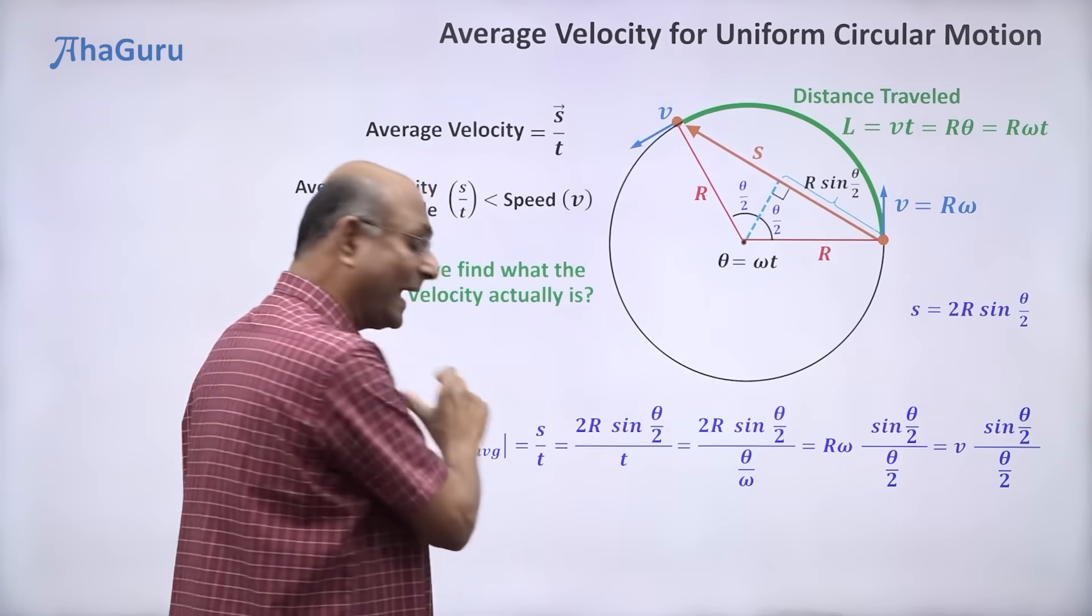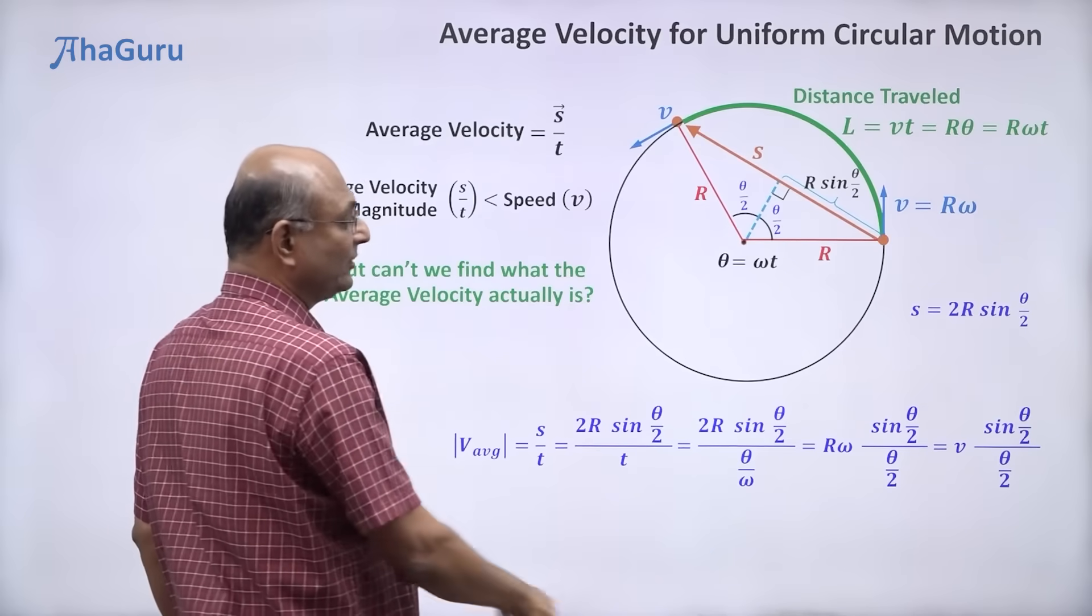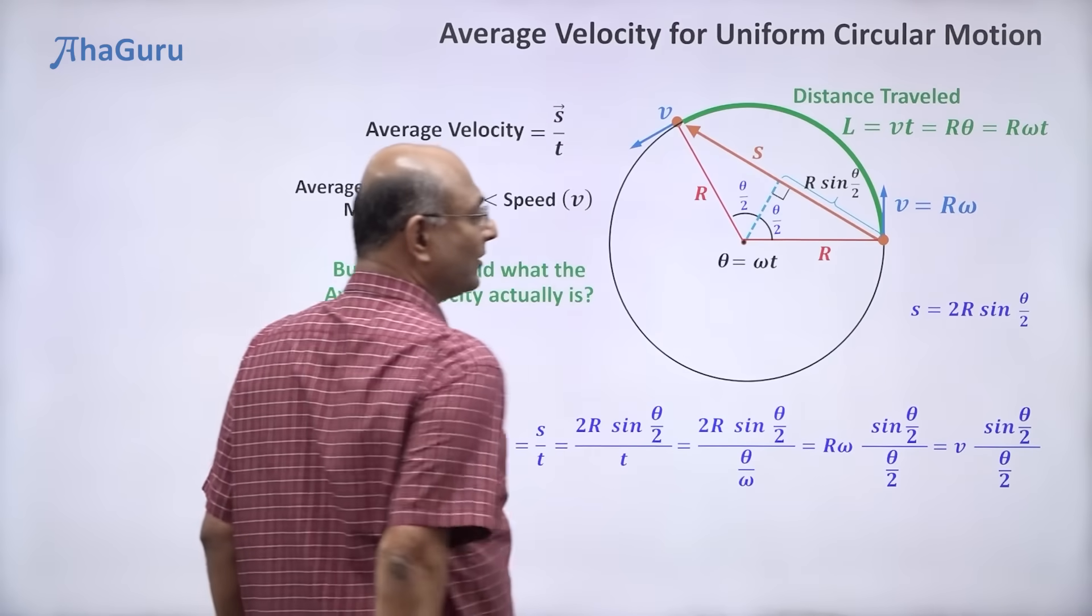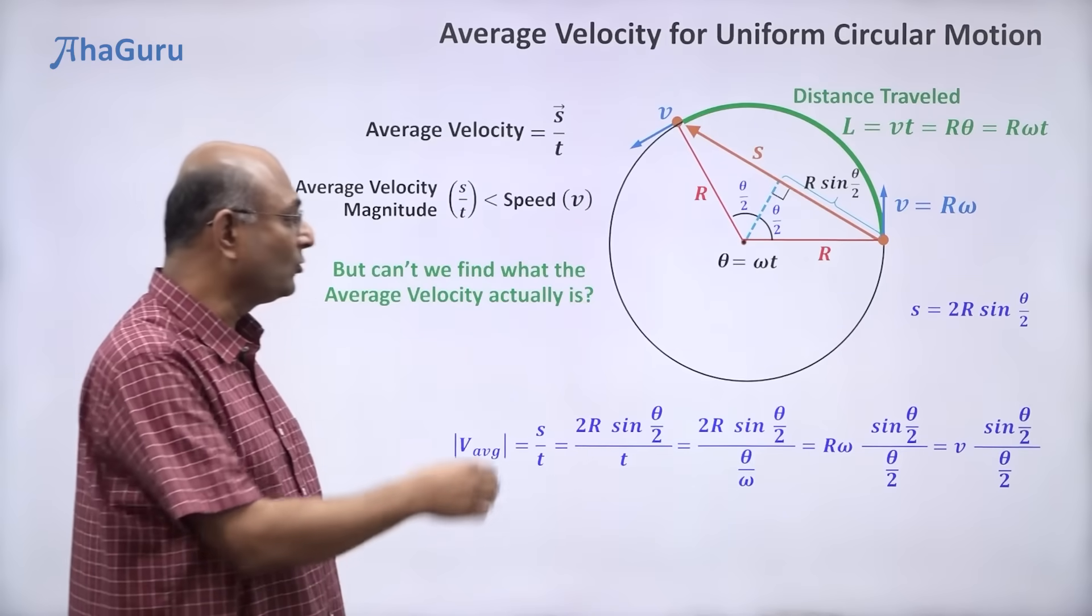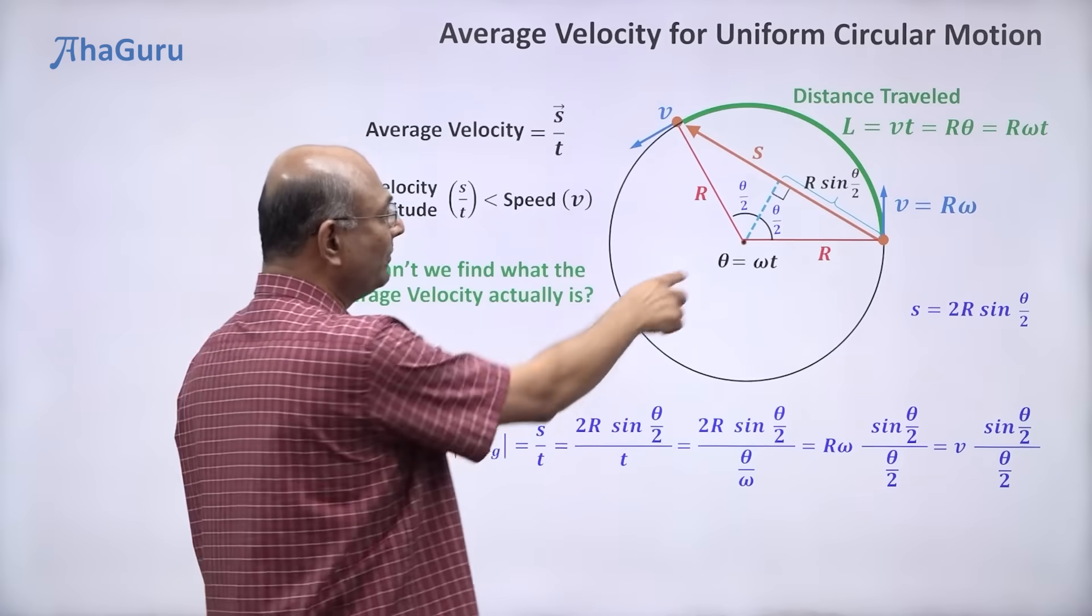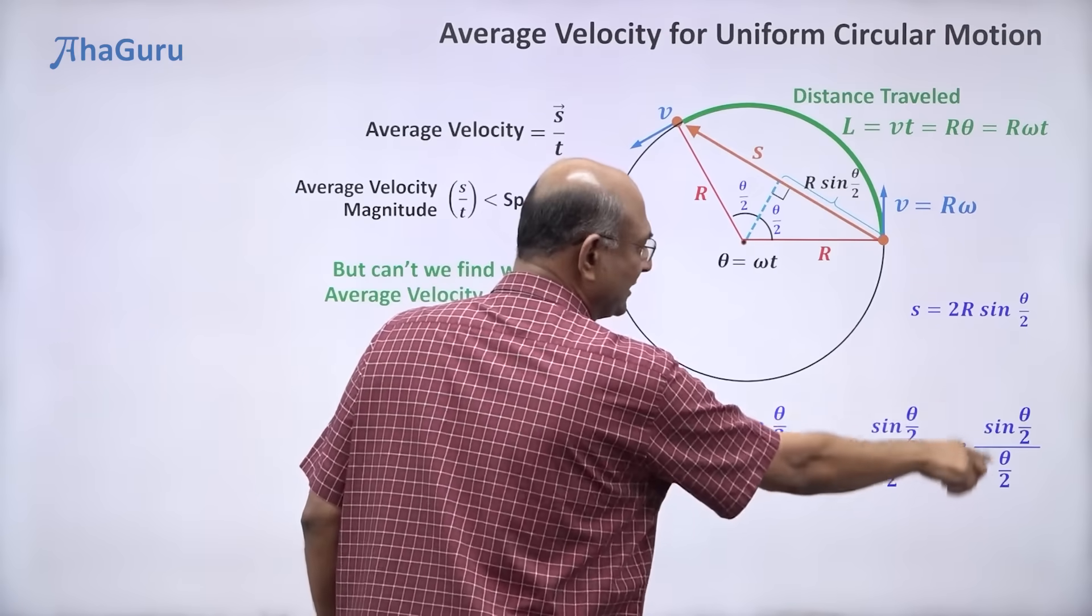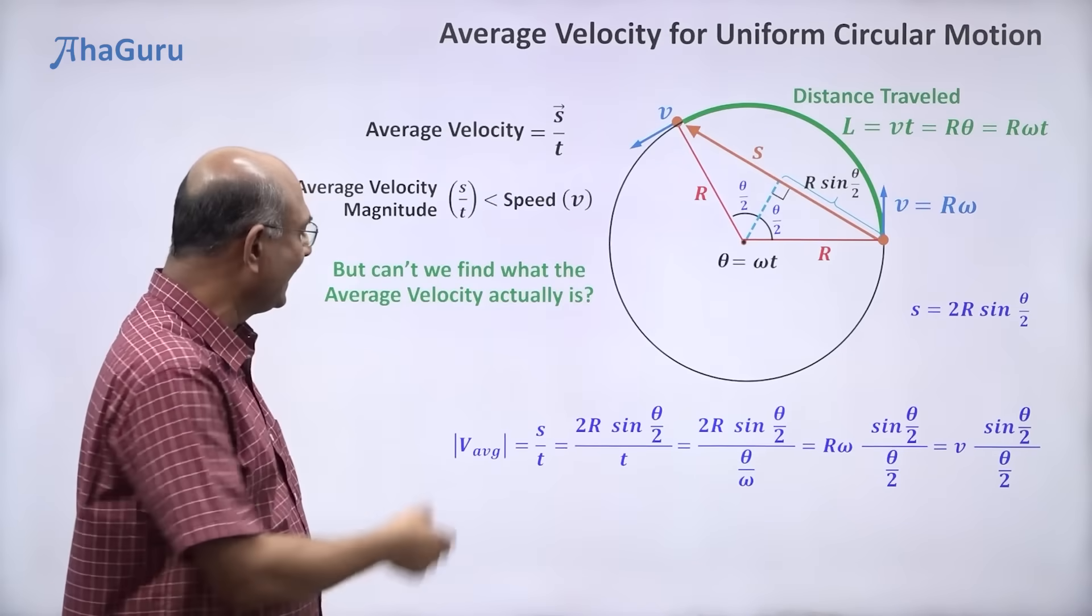So we have found the average velocity magnitude in terms of v. V times sin theta by 2 by theta by 2. And what is theta? Omega t. So if you knew omega and t, you can substitute omega and t there and you can get the answer.